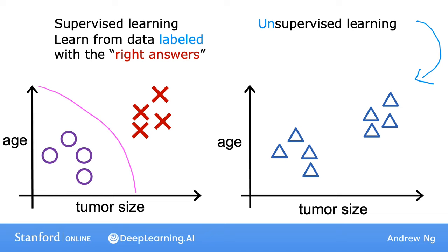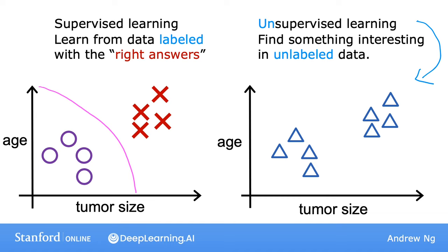Say you're given data on patients and their tumor size and the patient's age, but not whether the tumor was benign or malignant. So the dataset looks like this on the right. We're not asked to diagnose whether the tumor is benign or malignant because we're not given any labels Y in the dataset. Instead, our job is to find some structure or some pattern, or just find something interesting in the data.